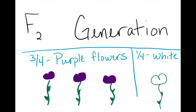Then, Mendel allowed the F1 plants to self-pollinate. Their offspring are called the F2 generation. Most of the offspring had the same form of the trait as the F1 generation, but the lost trait from the P generation reappeared in about one-fourth of the pea plants. So, three-fourths of the F2 plants had purple flowers, while one-fourth had white flowers.